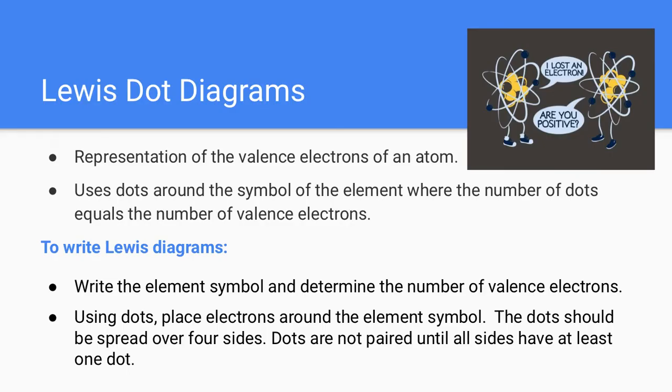Before we get into what an ionic bond is, we need a way to represent bonding and one of the easiest ways is to use a Lewis dot diagram. Lewis dot diagrams represent just the valence electrons of an atom. We use dots around the symbol of the element where the number of dots equals the number of valence electrons.